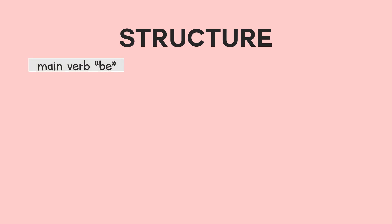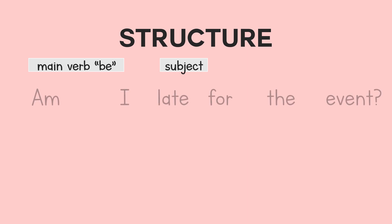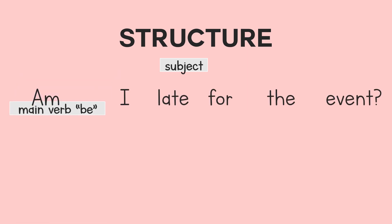We can also use this structure: main verb be plus subject. For example, am I late for the event? The main verb is am, and the subject is I.